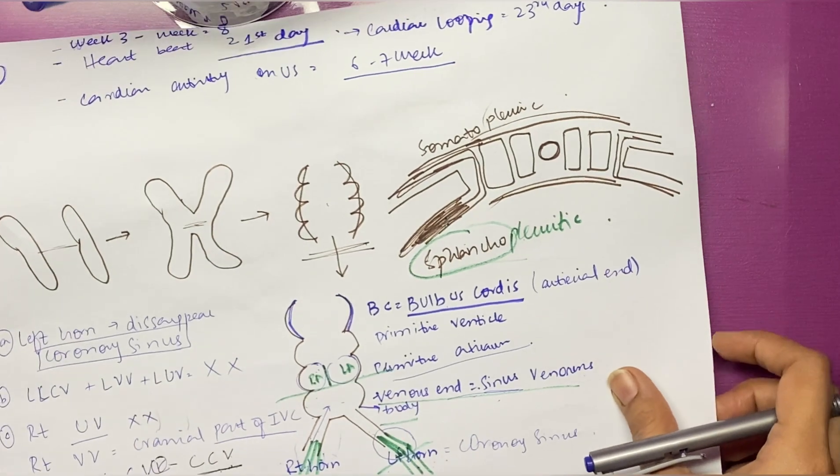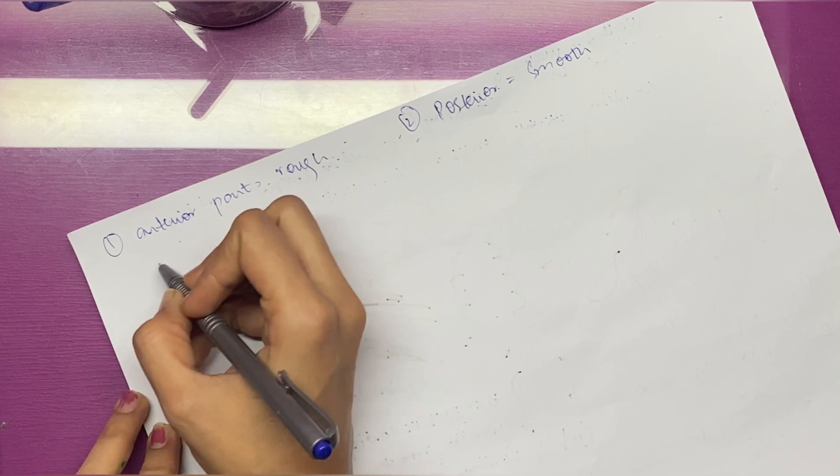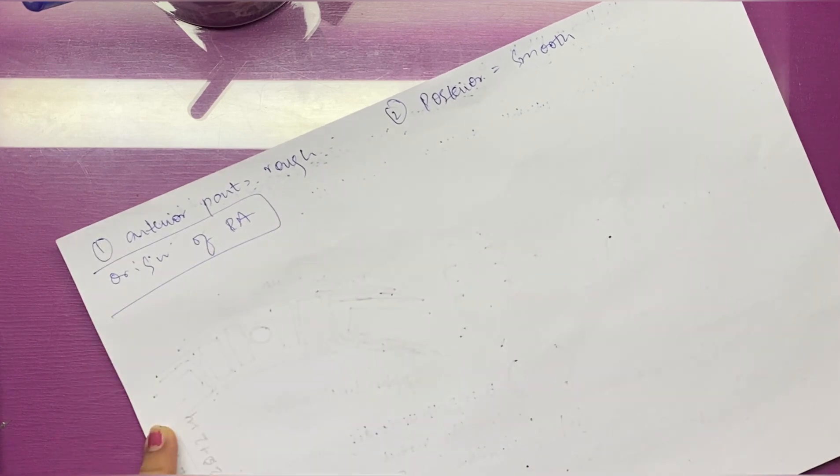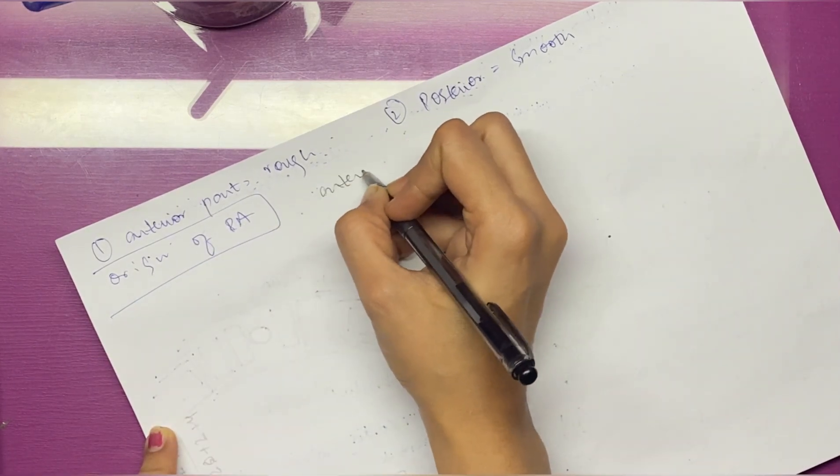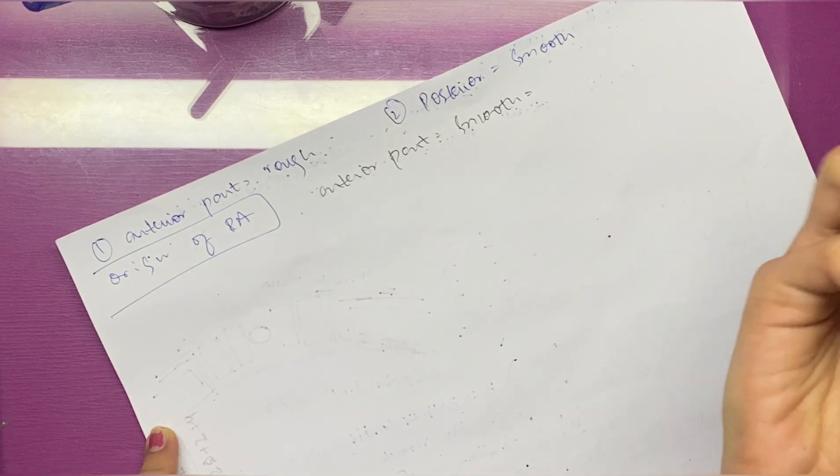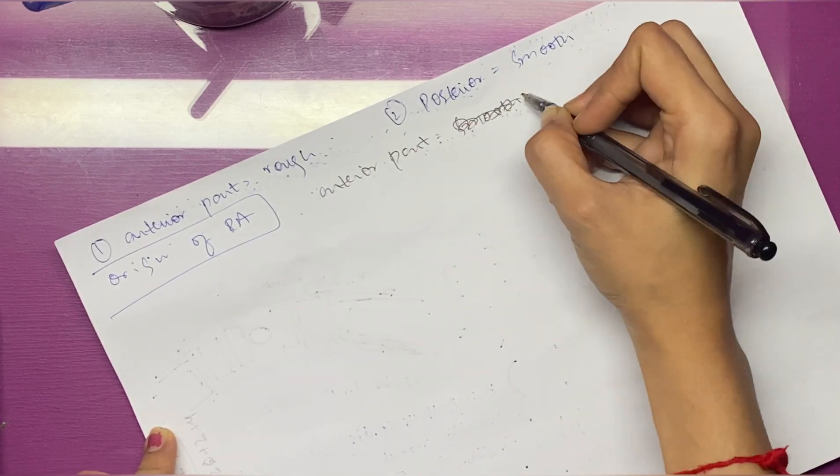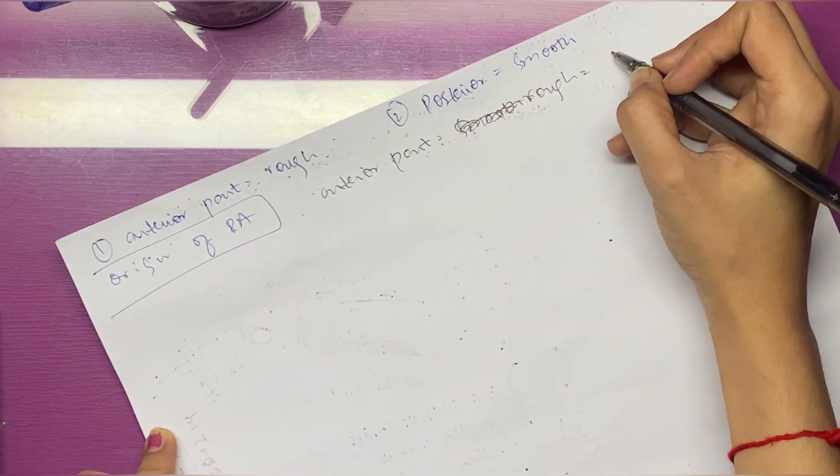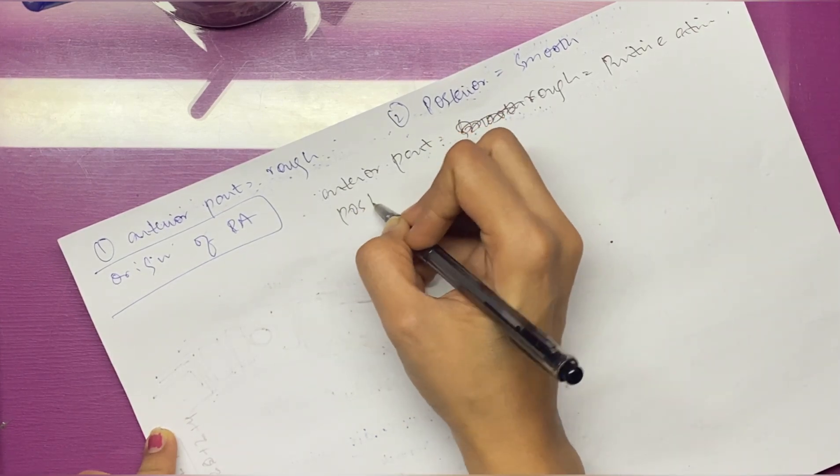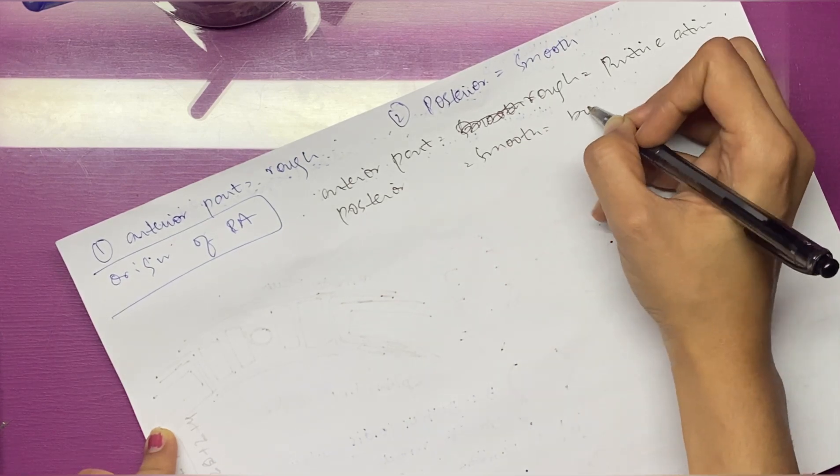Now you have to write these things down: the origin of the right atrium. The anterior part is the rough part, and the rough part is formed by the primitive atrium. The posterior part is the smooth part, and the smooth part is formed by the body of sinus venosus.